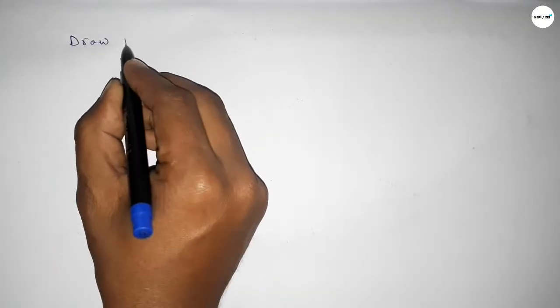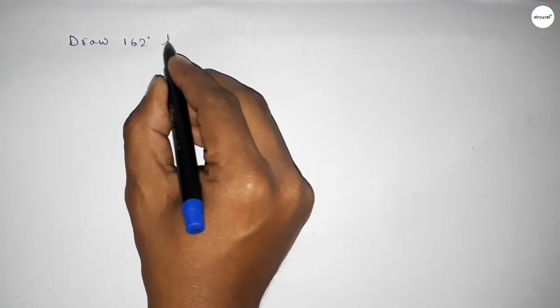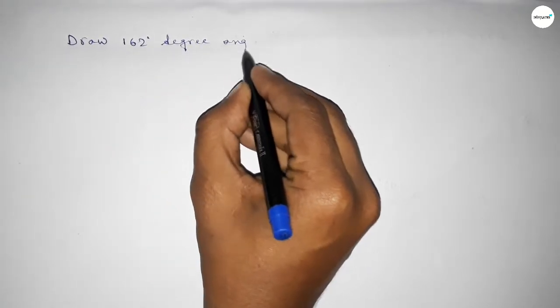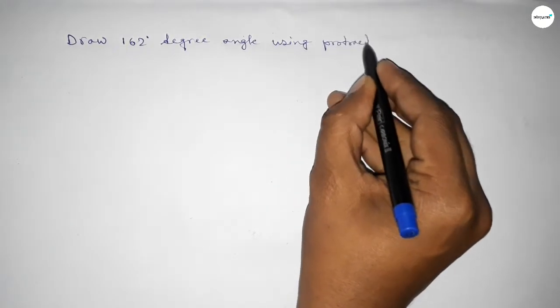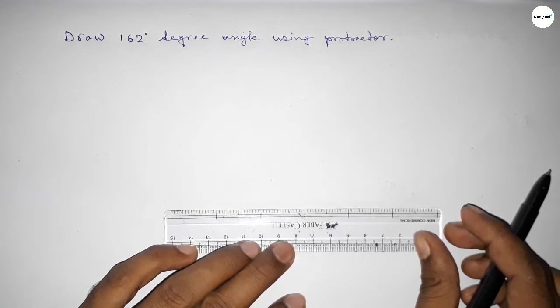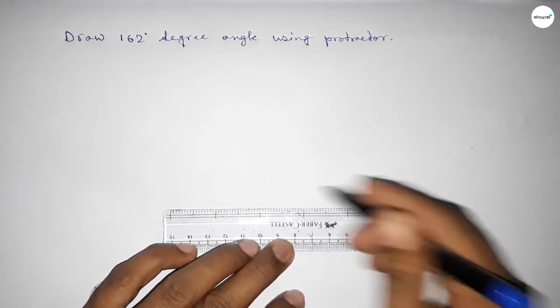Hi everyone, welcome to SI Share Classes. Today in this video we have to draw a 162 degree angle by using a protractor. So let's start the video. First of all, we have to draw here a straight line of any length.